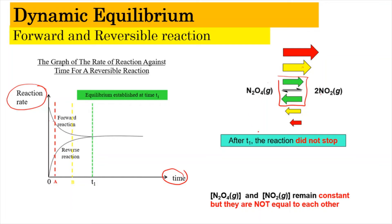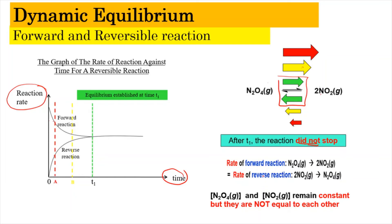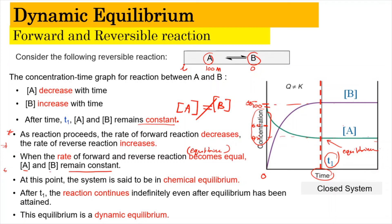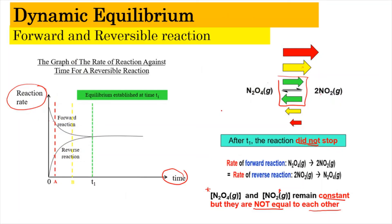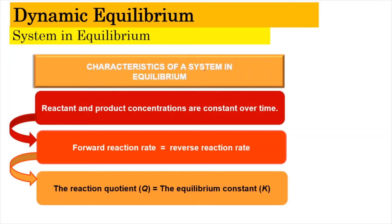At equilibrium, the reaction did not stop — what happened is that the rate of the forward reaction is the same as the reverse reaction, and the concentration of reactant as well as product will remain constant, but they are not equal to each other. There are three characteristics of a system in equilibrium: first, the reactant and product concentrations are constant over time; second, the rate of the forward reaction is the same as the reverse reaction; and third, the reaction quotient Q is equal to the equilibrium constant. The third point will be covered in subtopic 6.2 in the next video.